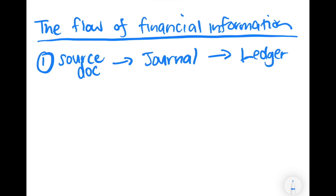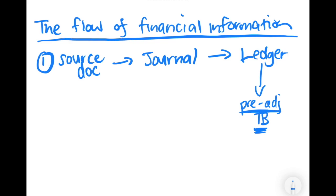When it comes to preparing financial statements, we need to extract information from the ledger as a starting point. What we're going to do is extract a pre-adjustment trial balance. A trial balance is simply a list of all the accounts sitting in the general ledger, and the pre-adjustment part means we're taking all of the accounts with their summary information as-is.